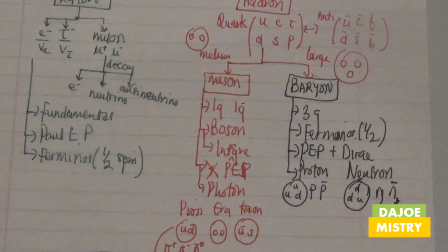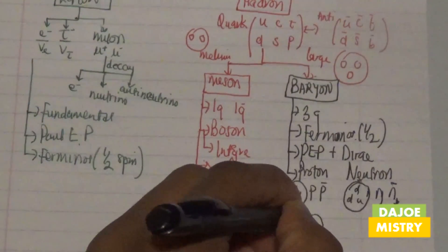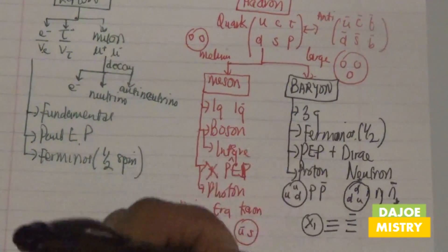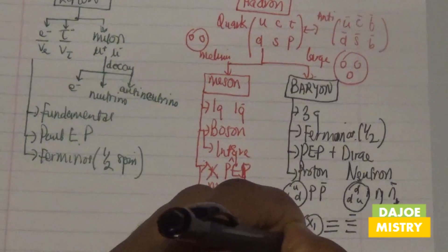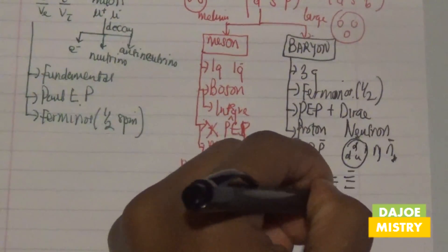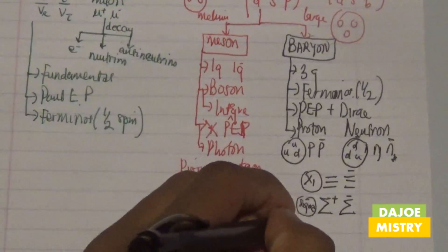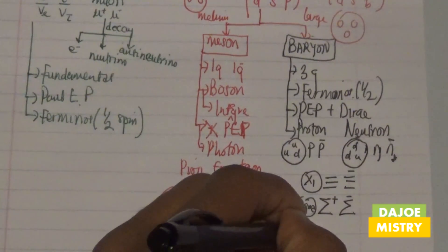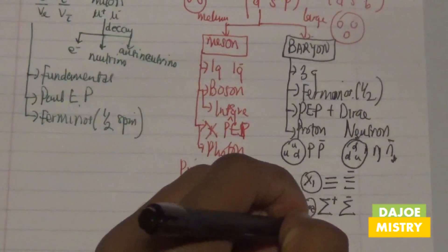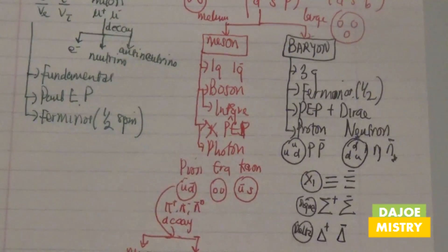Other forms of baryons include Xi, which is either Xi or Xi bar. We also have Sigma, which can be sigma positive or sigma bar. And lastly we have Delta, which also has three quarks and consists of either delta positive, delta negative, or delta bar.